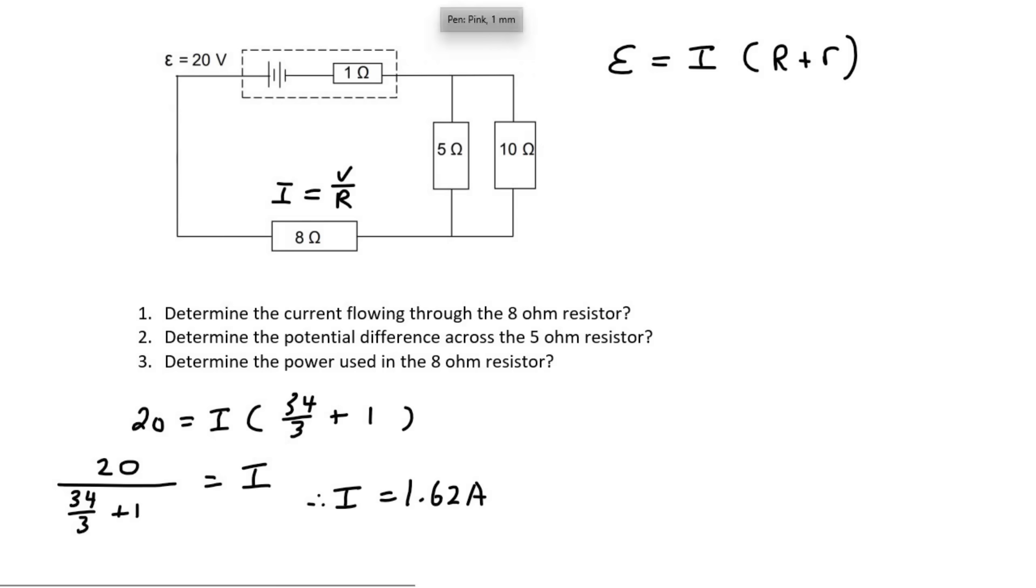And so that 1.62 amps is the current flowing in the main part of the circuit. So that would be all of this over here, up to there, and there. Because in this part over here, we know that the current splits, and some of it goes this way. But then it combines again to become part of the main circuit. Okay, so in our main circuit, we have 1.62 amps.